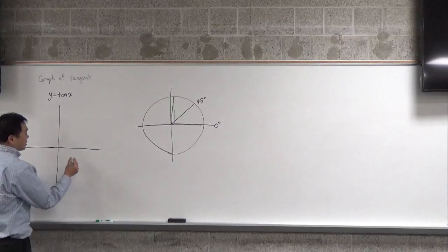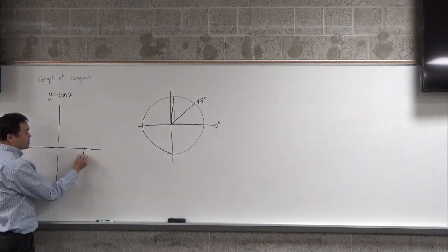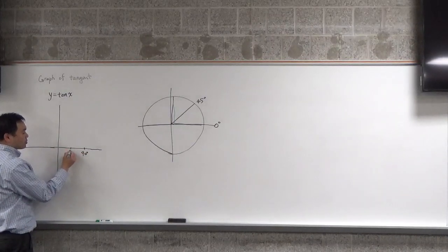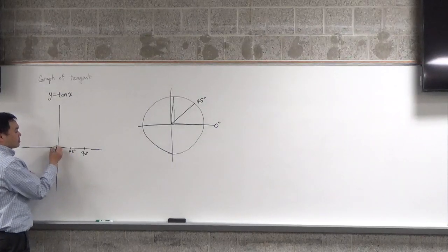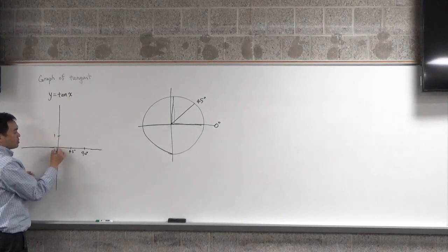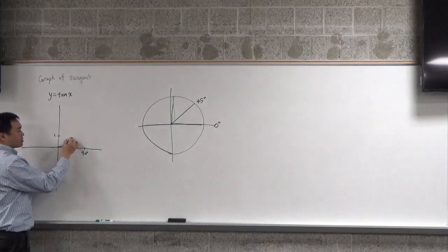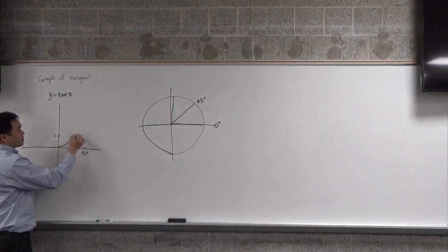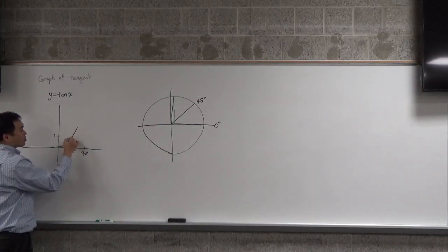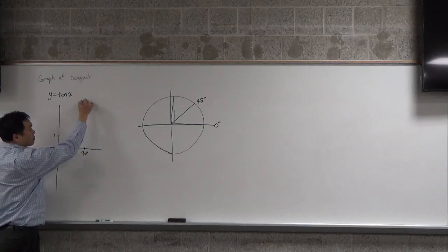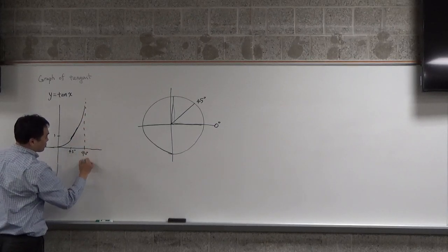So what that means is that if this is 90 degrees, and let's say this is 45 degrees, and let's say this is 1, initially it goes to 1, and then as it goes past 45 degrees, it just goes up and up as it gets closer and closer to 90 degrees.